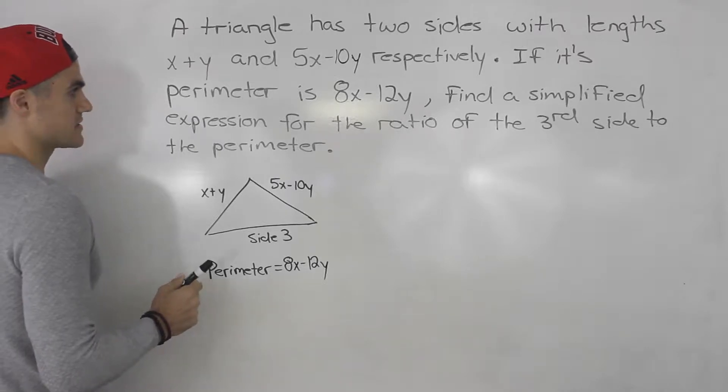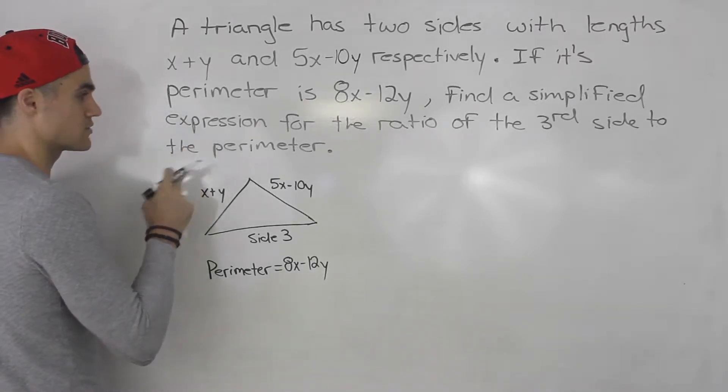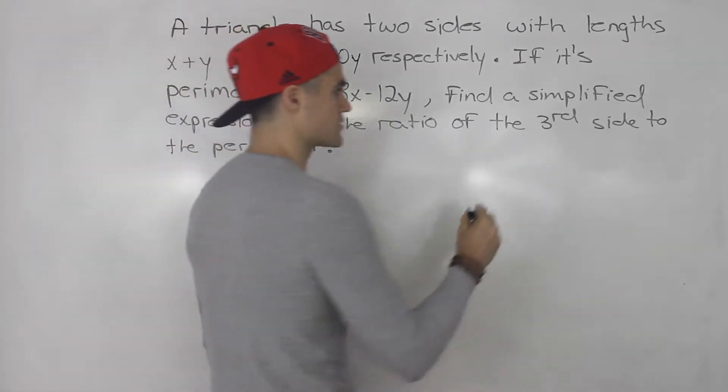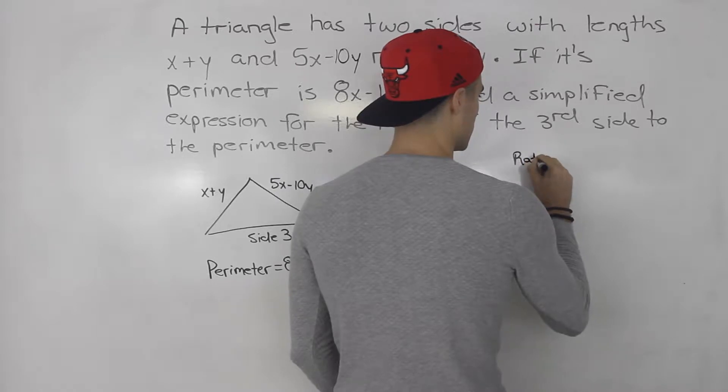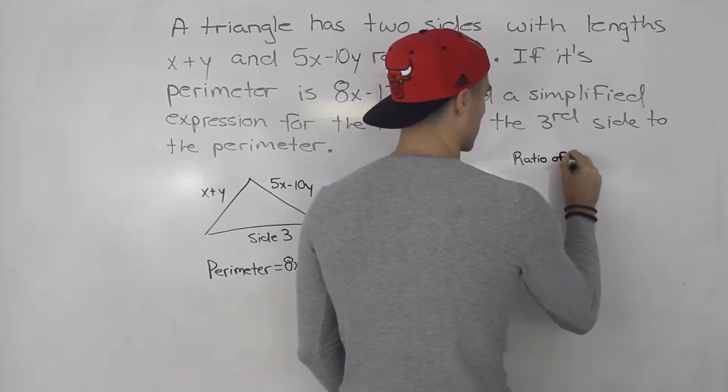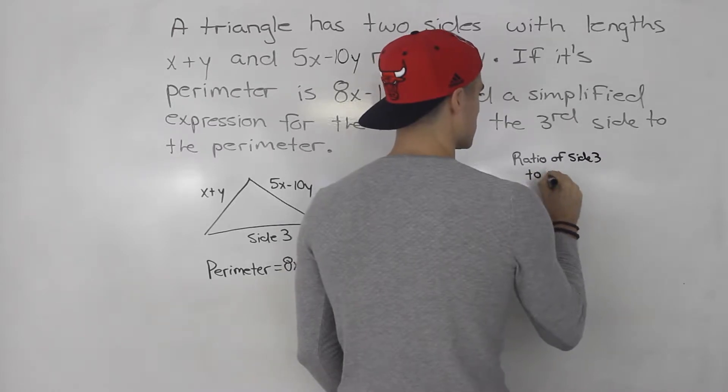And then we have to find a simplified expression for the ratio of the third side to the perimeter. So how can we represent the ratio of side 3 to the perimeter?